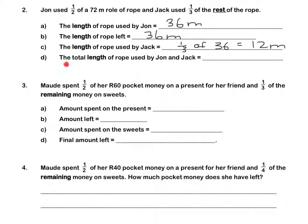The total length of rope used by John and Jack is 36 plus 12, which gives us 48 metres. Pause this video to complete up to Question 3 on this page.